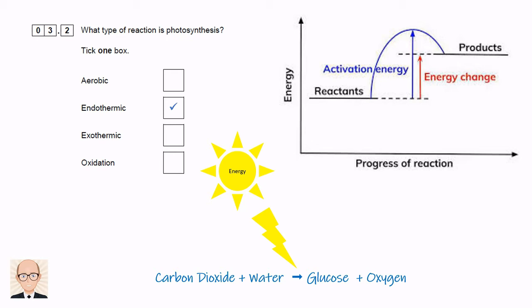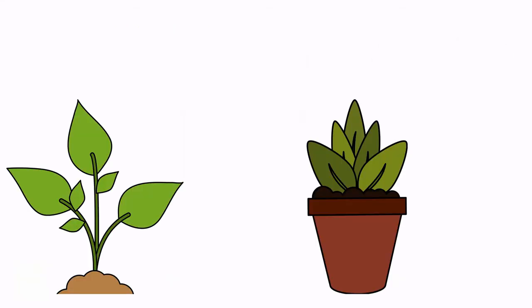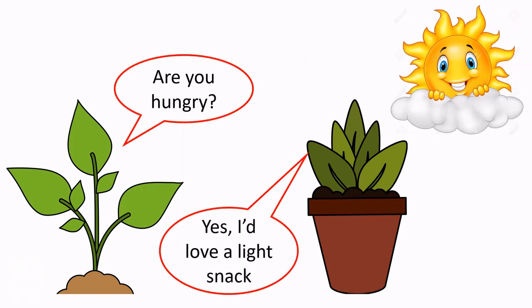To summarise the questions so far then, photosynthesis is a reaction which uses light energy to join carbon dioxide and water in order to make plant food in the form of glucose. Are you hungry? Yes, I'd love a light snack. If you two have quite finished. Thanks.